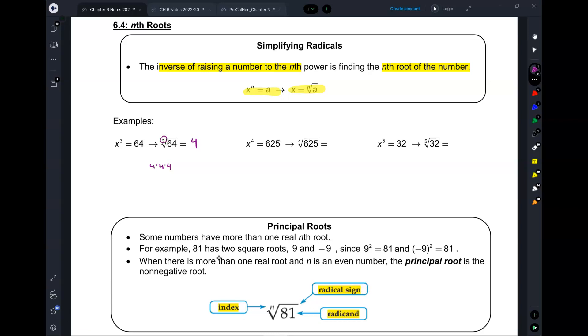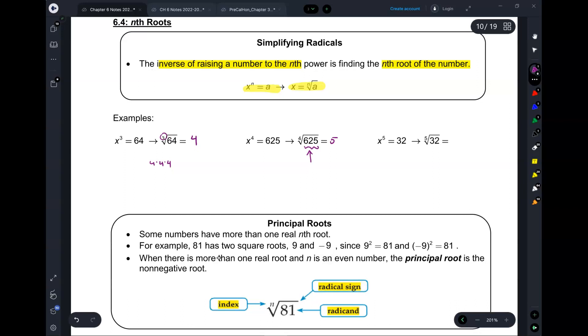All right, so same with this one. You have x to the power of 4 equals 625. So to figure out what x is, you say, okay, what's the 4th root of 625? So basically, you have to think to yourself, what number, when you multiply with itself four times, do you get 625? It's 5. And then x to the power of 5 equals 32. Now, I want the 5th root of 32, which is 2.